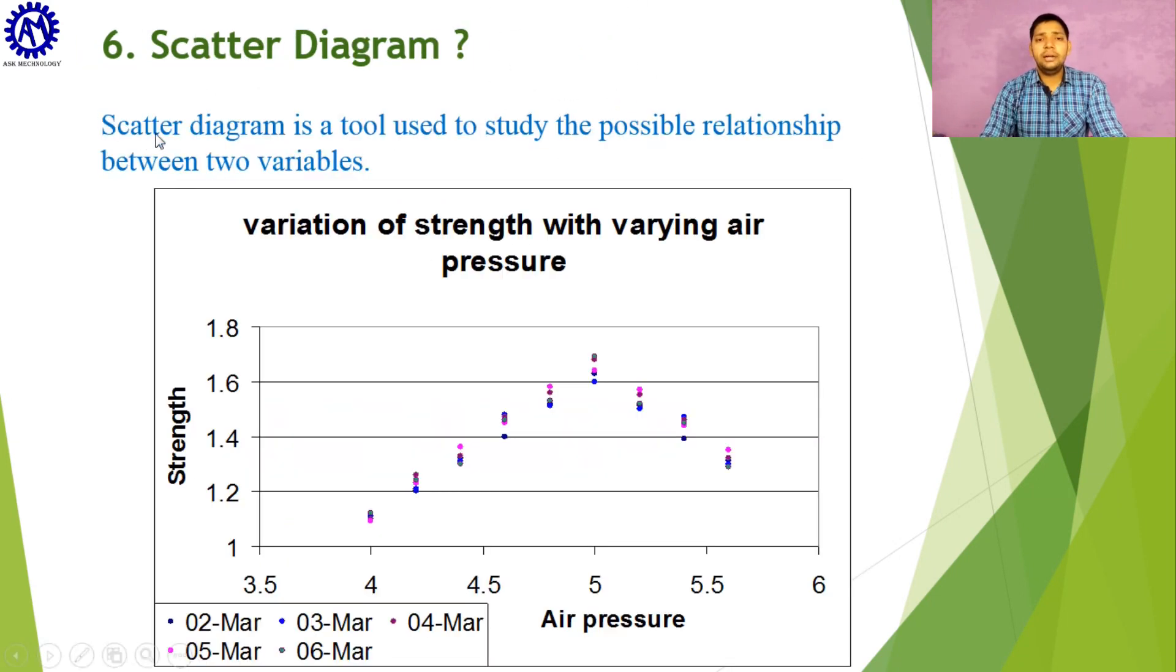After that, let us discuss the scatter diagram. Scatter diagram is a tool used to study the possible relationship between two variables. As you can see, there is a scatter diagram. Here strength and air pressure are mentioned on the left side and bottom of the graph respectively. Pressure is increasing on the x-axis and strength is increasing on the y-axis. Here you can see the relationship between them: as we increase the air pressure, strength also increases. In scatter diagram, we can study how one variable's value affects the other variable.